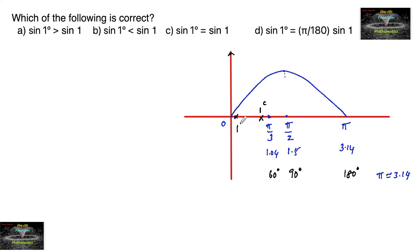So here I can just write 1 degree. It's very clear we can say that 1 degree is smaller than 1 radian, and we know that sine is increasing.